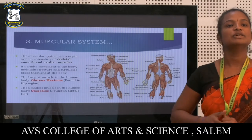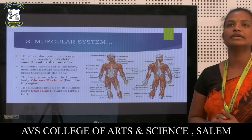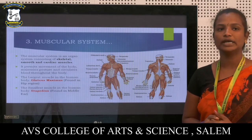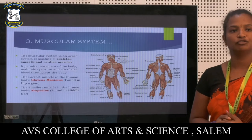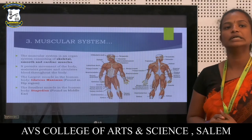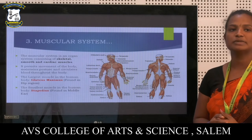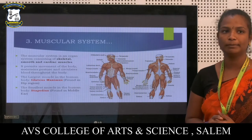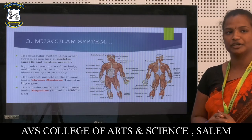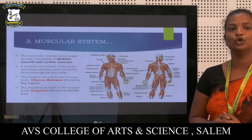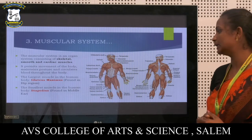The muscular system is an organ system consisting of skeletal, smooth and cardiac muscles. It permits movement of the body, maintains posture and circulates blood throughout the body. The largest muscle in the human body is the gluteus maximus, found in the hip region. The smallest muscle in the human body is the stapedius, found in the middle ear.